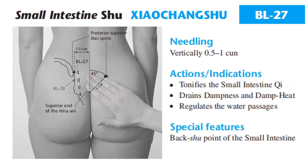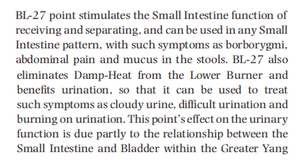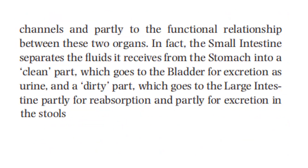Needling: Bladder 27 vertically 0.5 to 1 cun. For the actions and indications, it tonifies the small intestine Qi, drains dampness and damp heat, and regulates the water passages. Bladder 27's special feature is the back-Shu point of the small intestine. This point stimulates the small intestine function of receiving and separating, and can be used in many small intestine patterns with such symptoms as borborygmus, abdominal pain, and mucus in the stools. Bladder 27 also eliminates damp heat from the lower burner and benefits urination for symptoms such as cloudy urine, difficult urination, and burning on urination. This effect on urinary function is due partly to the relationship between the small intestine and bladder within the greater Yang channels, and partly to the functional relationship between these two organs.